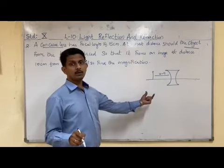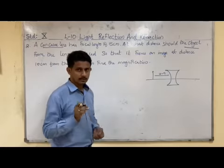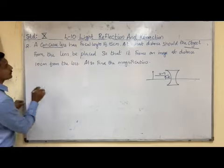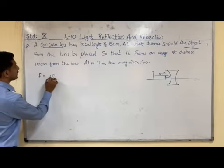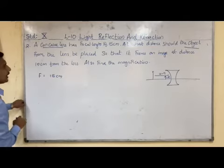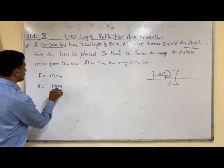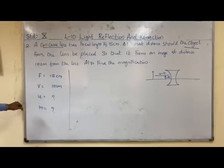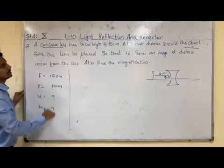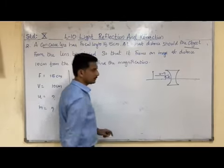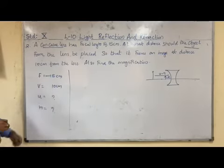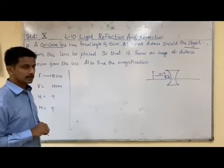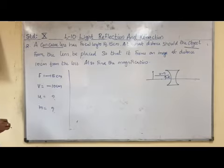We must remember that a concave lens always forms a virtual and erect image on the same side as the object — that is, on the left side of the lens. The focal length is given as 15 cm. Applying Cartesian sign conventions: the focal length of a concave lens is negative, so f equals −15 cm. Since the concave lens forms a virtual image, v is also negative, so v equals −10 cm. We need to find u and the magnification.